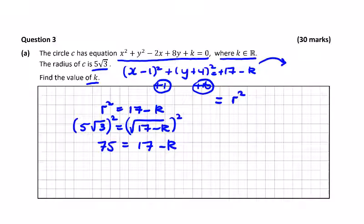So bringing k to the left will make it positive, that will leave us with 17 minus 75, so k in this format will be equal to minus 58.